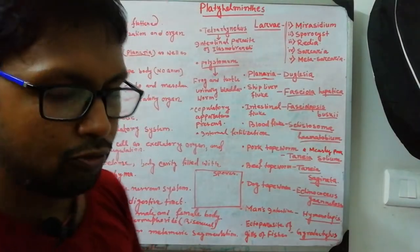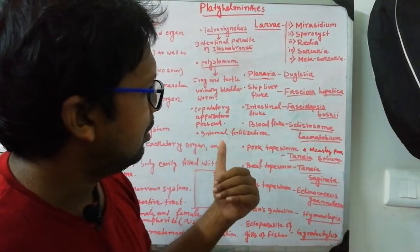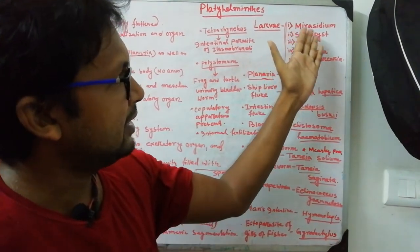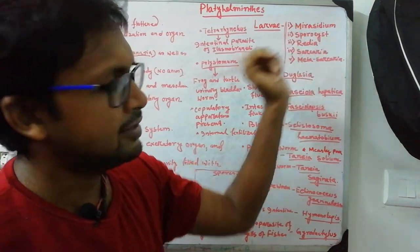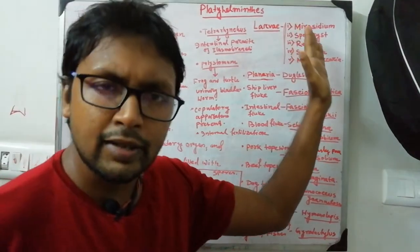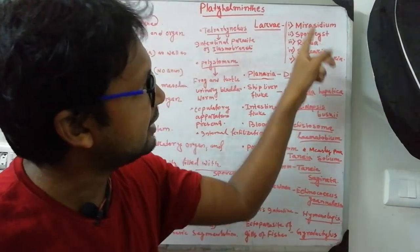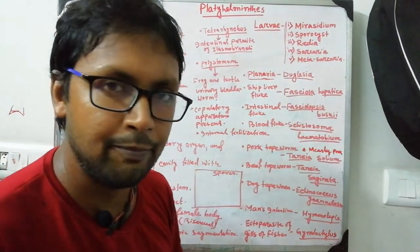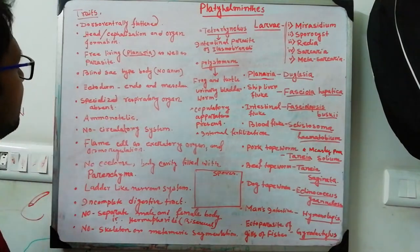The larval stages - Miracidium, Sporocyst, Redia, Cercaria, and Metacercaria - are mainly those of Fasciola hepatica. Among these, Miracidium and Metacercaria are the two most important. Students must understand and remember the sequence: first Miracidium, then Sporocyst, then Redia, Cercaria, and Metacercaria.